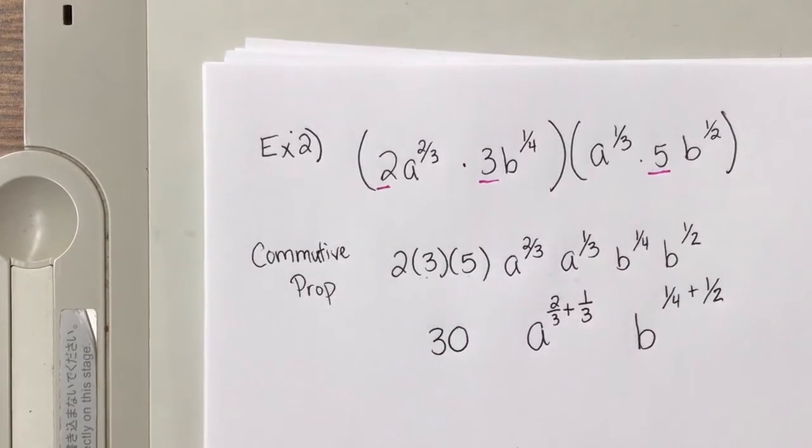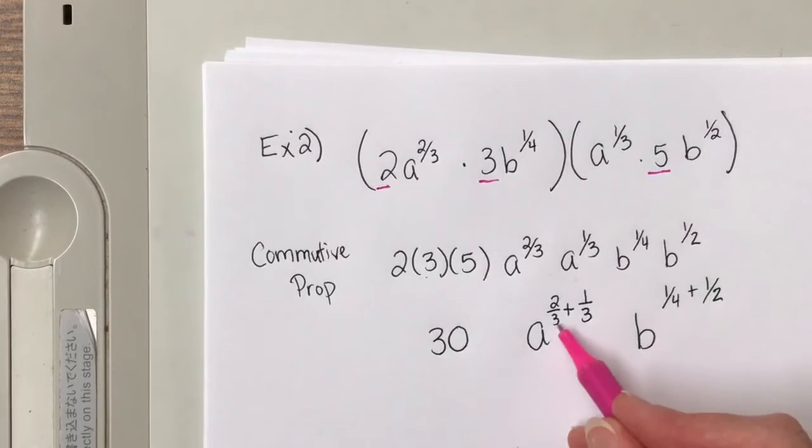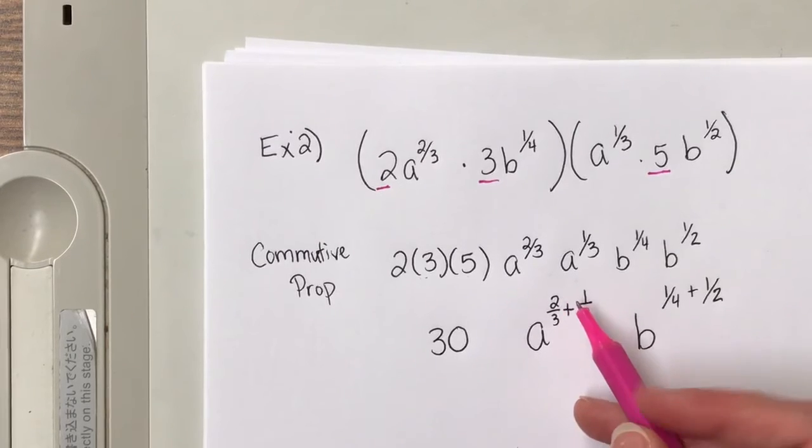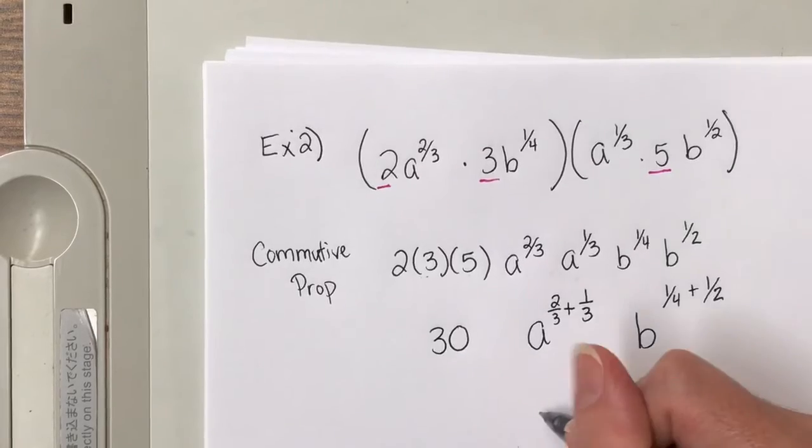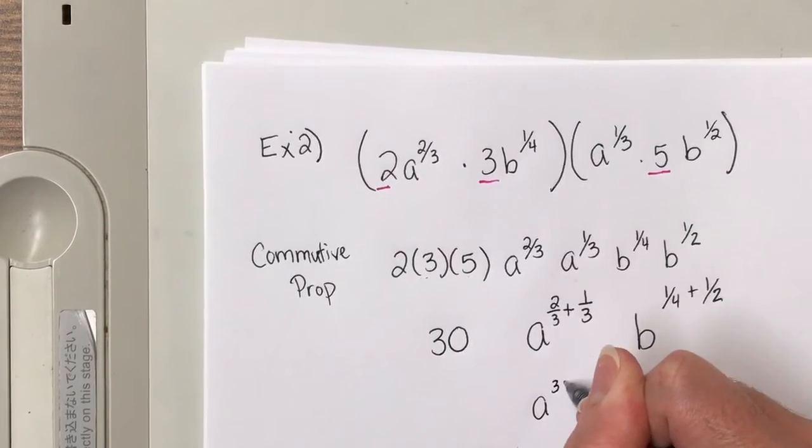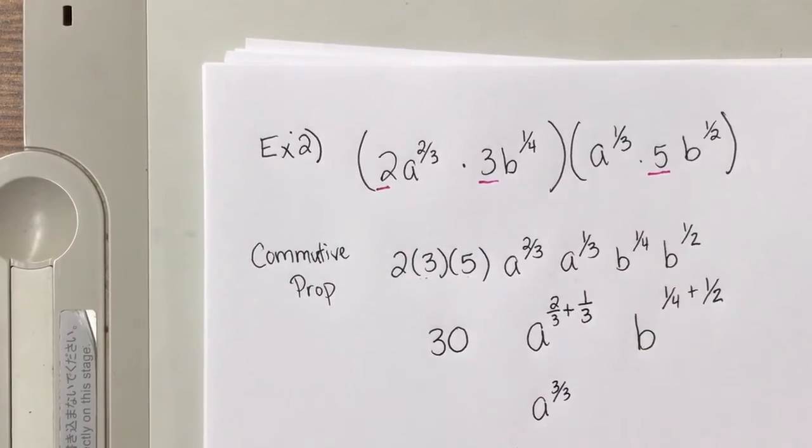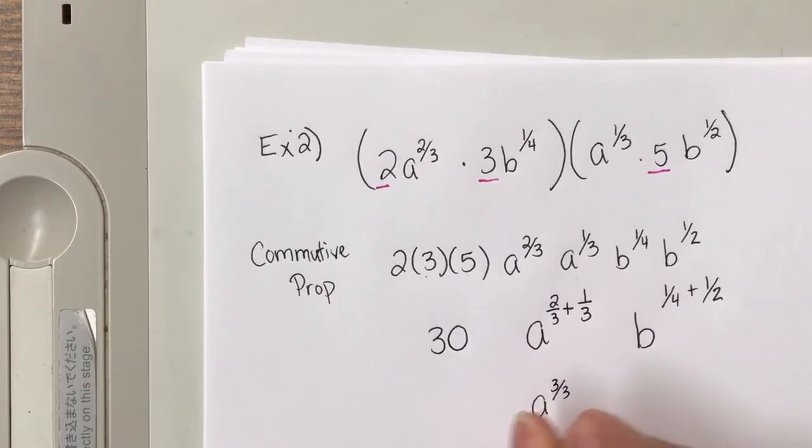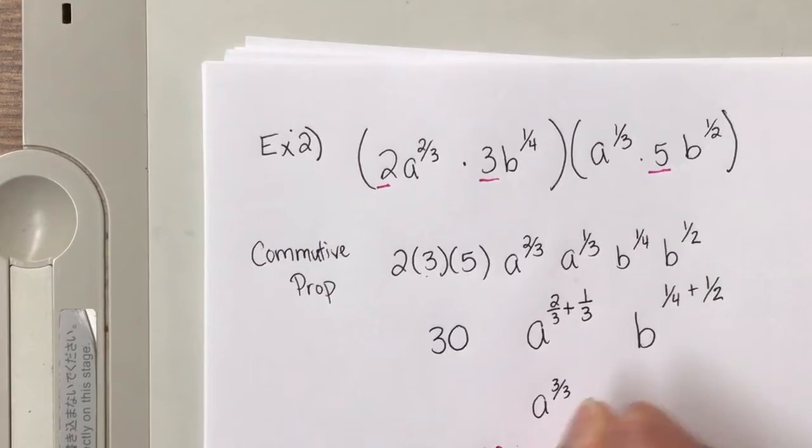This becomes a to the two-thirds plus one-third. And this becomes b to the one-fourth plus one-half. So what is two-thirds plus one-third? Well, we've got the same denominator, so we can just add the tops. 2 plus 1 is 3. A to the 3 over 3. Oh well, that's 1. So this becomes now 30 A to the first power, or 30 A.